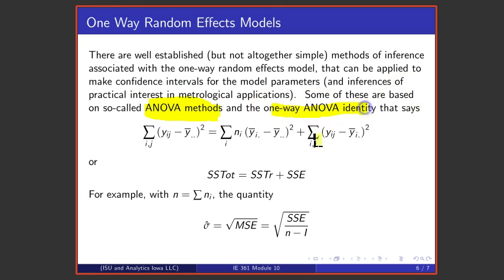Some of these are based on so-called analysis of variance methods and a so-called one-way ANOVA identity that basically says that overall variation in what's observed can be broken into something that is essentially a kind of variance of the sample means and then something that is essentially a pooled variance within the samples.